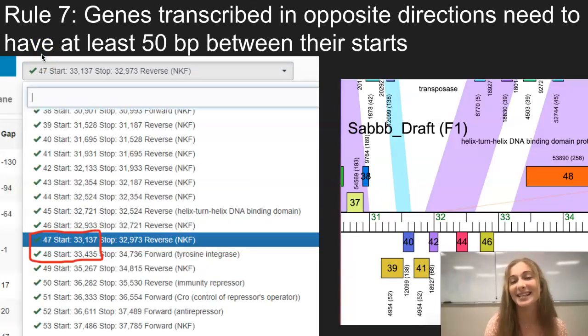Rule number 7 explains that when there is a directional change in how the gene is being transcribed, there needs to be at least a 50 base pair gap in the directional change. So on this FAMRIATOR map right here in this example, the gene is being transcribed forward and then it goes to reverse and then it goes to forward again. And there is indeed a 50 base pair gap in both of these directional changes right here.